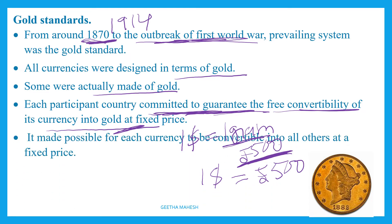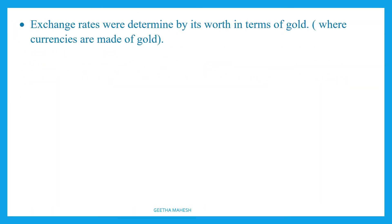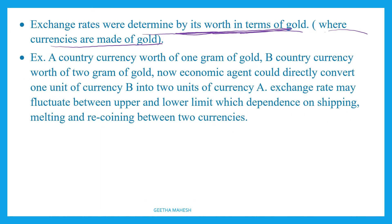This made it possible for each currency to be converted into all others at a fixed price. Under the gold standard, exchange rates were determined by each currency's worth in terms of gold — that is, how much gold was used to make a particular country's currency determined its exchange rate. Let us understand this with an example.